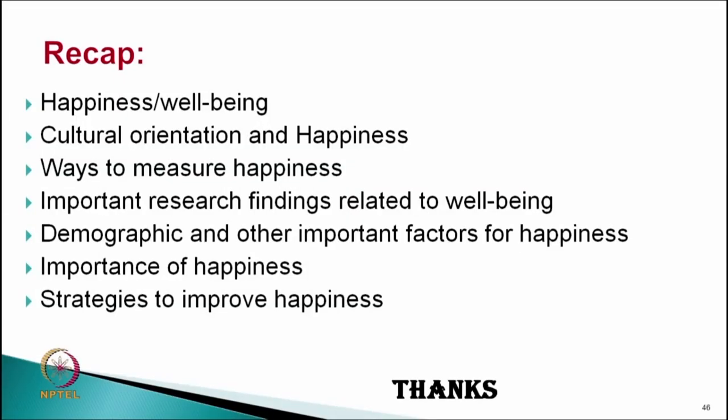Let us summarize what we have covered in this chapter. We discussed happiness and well-being theories, covering a number of theories. We discussed cultural orientation and happiness, various ways to measure happiness, important research findings related to well-being, demographic variables and other important factors for happiness, and the importance of happiness as well as various strategies to improve happiness. More strategies can be addressed if we have an application-focused course in the future. I hope you have understood various things related to happiness in this chapter.